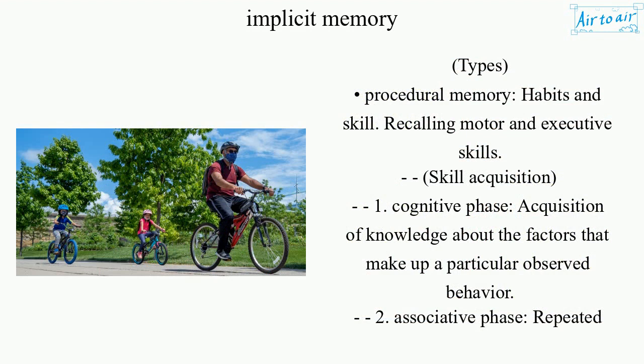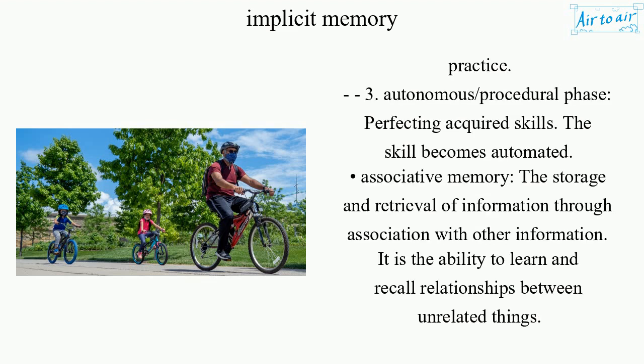There are three phases of skill acquisition. First, the cognitive phase: acquisition of knowledge about the factors that make up a particular observed behavior. Second, the associative phase: repeated practice. Third, the autonomous procedural phase: perfecting acquired skills until the skill becomes automated.